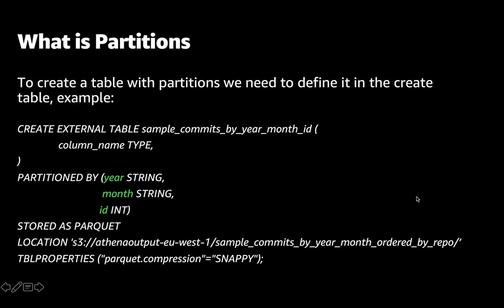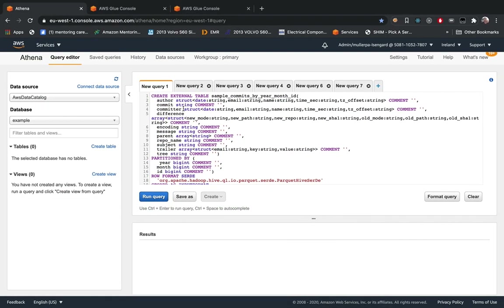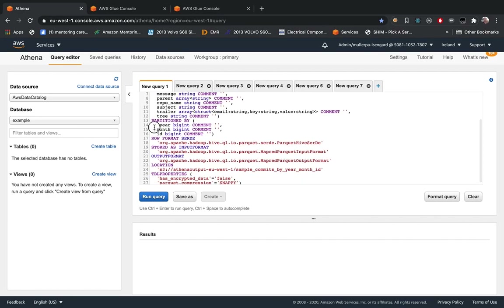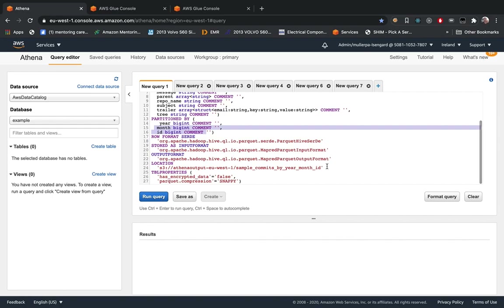On the CREATE TABLE statement, you define the partitions. For example, here I'm creating a table — here are the column types, the partitions, and the type of the partitions, and the location. On Athena, when you run this CREATE TABLE, it's going to create a table with three partitions, and when you query the table, it's going to read the data inside of this path.